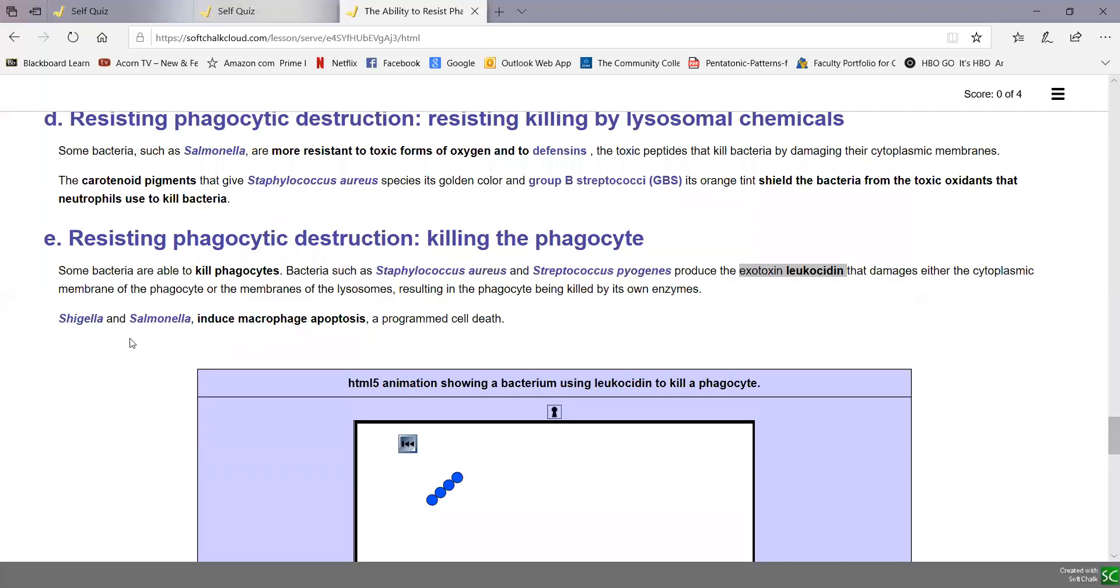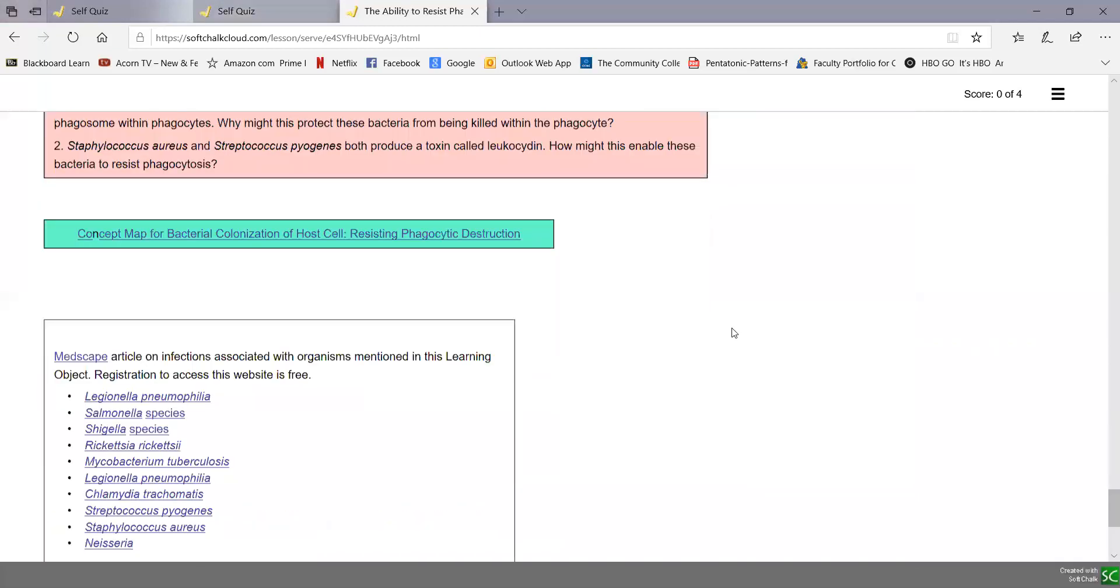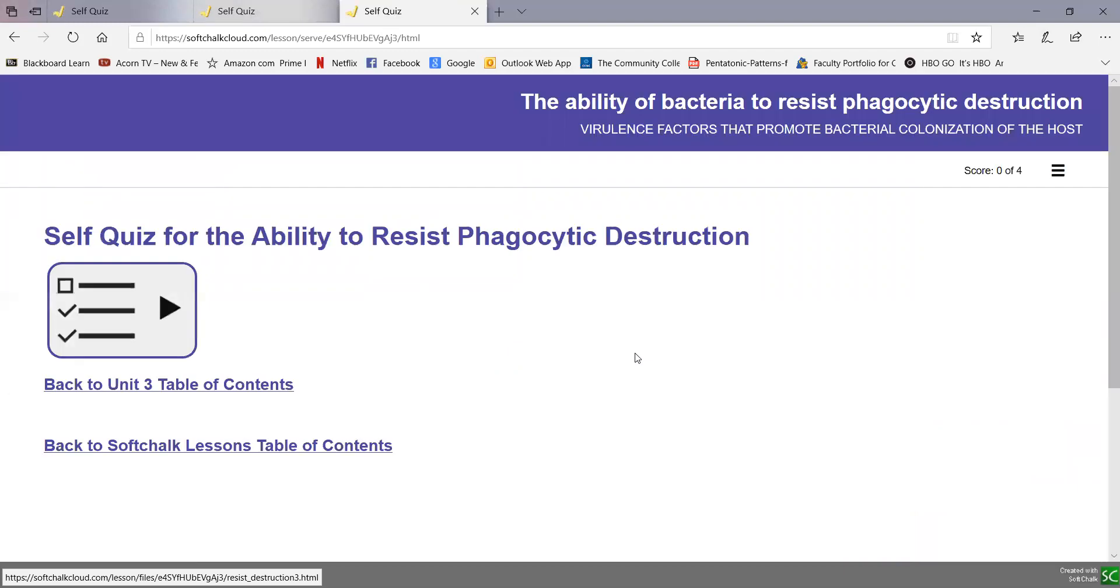Both Shigella and Salmonella induce macrophage apoptosis, a programmed cell suicide. When these bacteria are engulfed, they trigger the cell suicide pathway of the macrophage, and the macrophage undergoes programmed cell death. They wind up killing the phagocyte. Those are ways bacteria can resist phagocytic destruction once they're engulfed. And there's our self-quiz at the end of that soft chalk lesson.